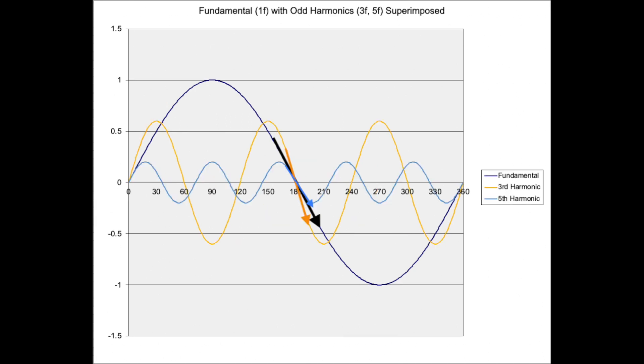Contrast that with the odd harmonic waveforms. In this case, only the odd harmonics cross the 180 degree point with the same polarity as the fundamental. So perhaps it's this property that's critical to the formation of the square wave.